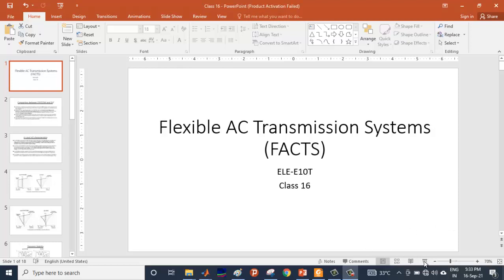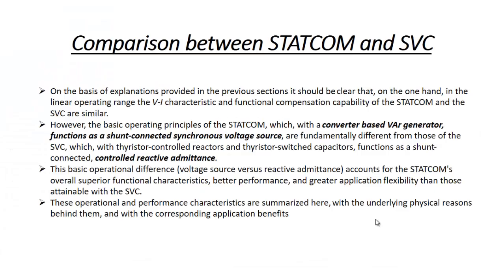Welcome to the new lecture. In this lecture we will be discussing about the comparison of the two shunt compensators, that is the STATCOM and the SVC. As we have discussed earlier, in the linear operating range of the VI characteristics, the functional compensation capability provided by STATCOM and SVC are typically similar. Both of them are trying to maintain the voltage at the reference value. In the VI characteristics of both compensators, we have a horizontal line which is parallel to the current axis.